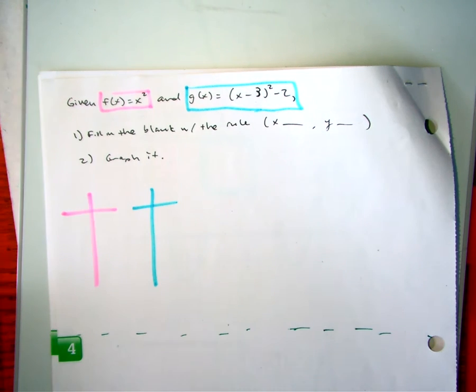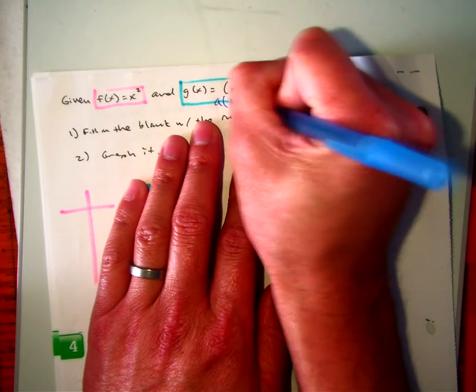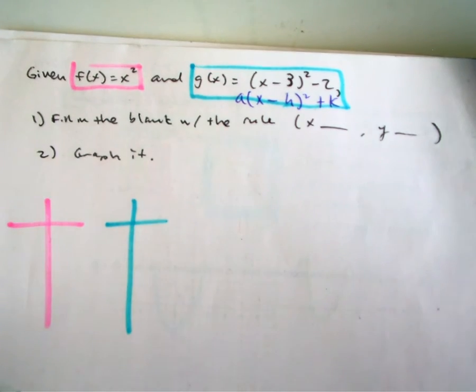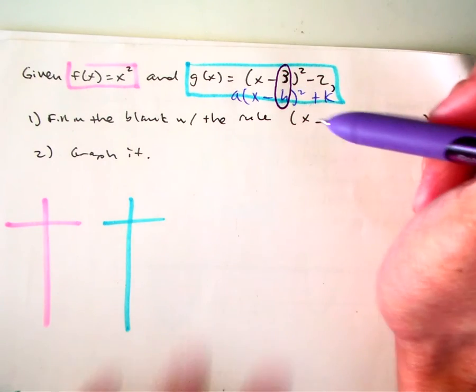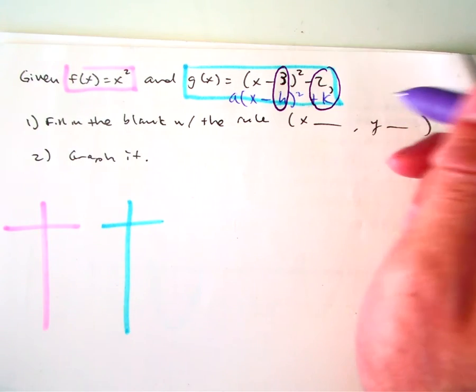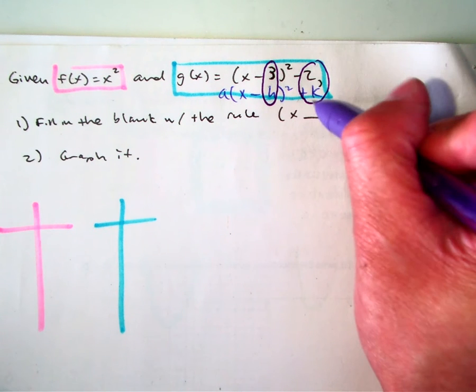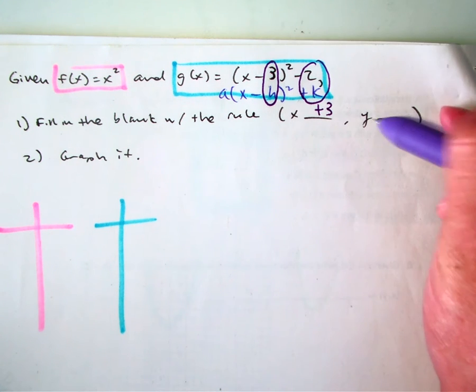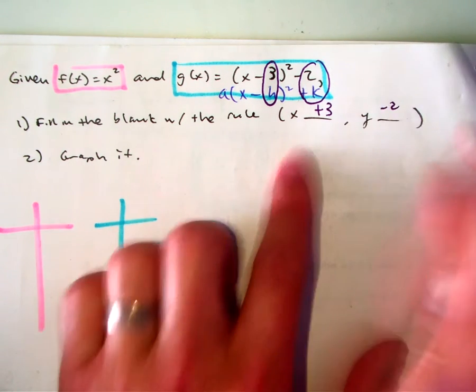What is vertex form? And Dan, what is our h value? And what is your k value? So what rule did you write? X what? Plus or minus? Y? Class, show me your thumbs up or down.